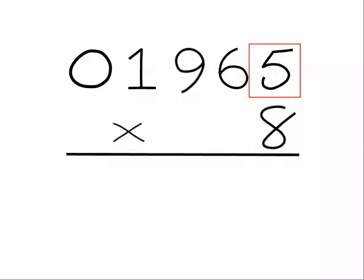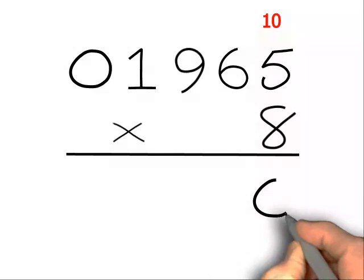We subtract the 5 from 10, giving us 5. We then double that, giving us 10. So we write down the 0 and carry the 1.